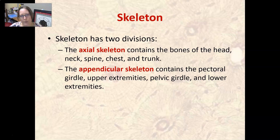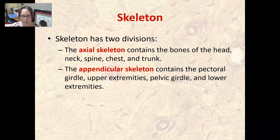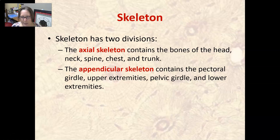The skeleton has two divisions. The axial skeleton — think 'axis,' think middle — contains the bones of the head, neck, spine, chest, and trunk. The appendicular skeleton contains everything that allows for a lot of movement: your arms and legs and what attaches them. That includes the pectoral girdle and upper extremities — your arms and shoulders — and the pelvic girdle and lower extremities, which attach to the lower part of your vertebrae.